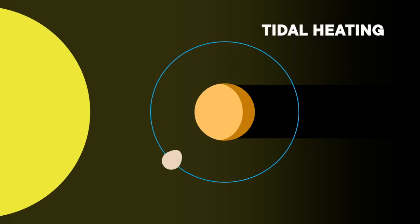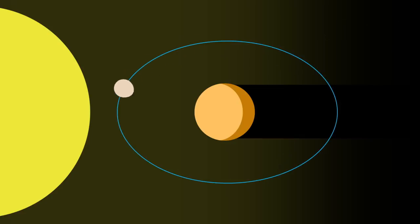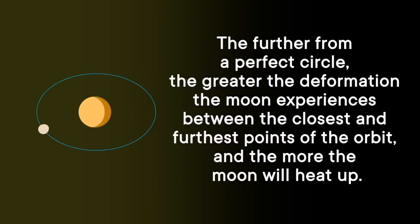This is when the gravitational force from the planet deforms the moon as it orbits. How much tidal heat a moon gets depends on how far away it is from its planet and the eccentricity of its orbit. That refers to how stretched out the ellipse of its orbital path is. The further from a perfect circle, the greater the deformation the moon experiences between the closest and furthest points of the orbit, and the more the moon will heat up.